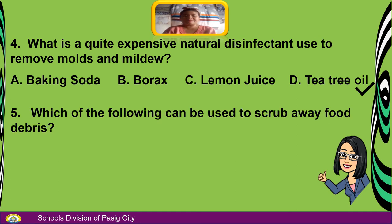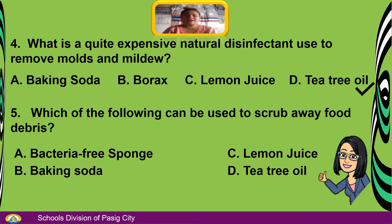And last, number 5. Which of the following can be used to scrub away food debris? A. Bacteria-free sponge. B. Baking soda. C. Lemon juice. D. Tea tree oil. The answer is A — Bacteria-free sponge.